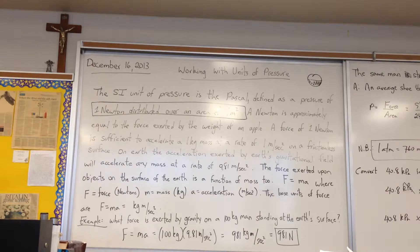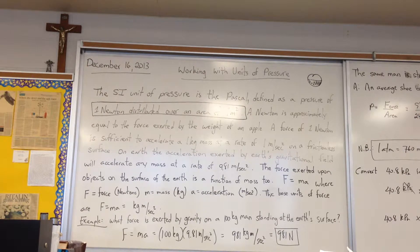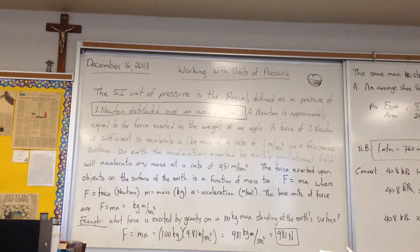On Earth, the acceleration exerted by its gravitational field will accelerate any mass at a rate of 9.81 meters per second squared. Now if you're standing on the surface of the Earth, the gravitational field is exerting a force on you, but you're not accelerating downwards because the ground is exerting a force upward to keep you from moving. But you are nevertheless exerting a force because your mass responds to the presence of the gravitational field by having a downward force.